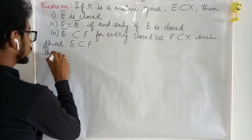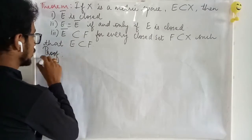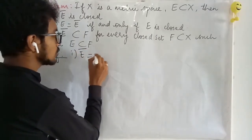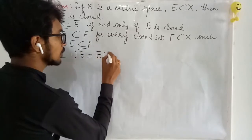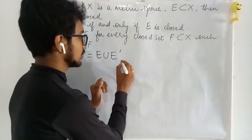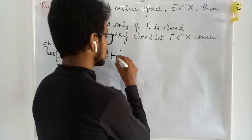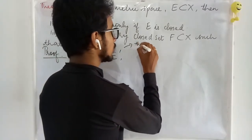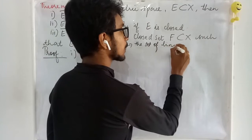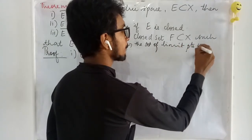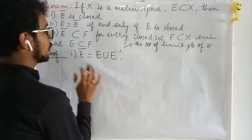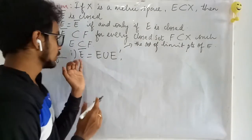E-bar, the closure of E, is defined as E union E-prime, where E-prime denotes the set of all limit points of E. This is what we have, and now we need to prove E-bar is closed.